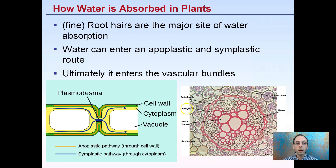The first key point: the main site of water absorption is the fine root. This is because the fine root has a lot of surface area to volume — a lot of contact. Not only the roots in general, but specifically the fine root is where the major site of water absorption occurs.